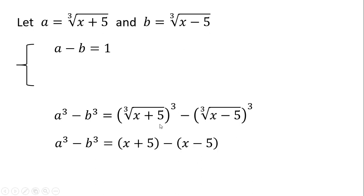Because if we simplify the right-hand side, we will have the quantity x plus 5 minus the quantity x minus 5. So if we simplify this further, we are left with the constant 10 in the right-hand side. So we have the equation a cubed minus b cubed equals 10.